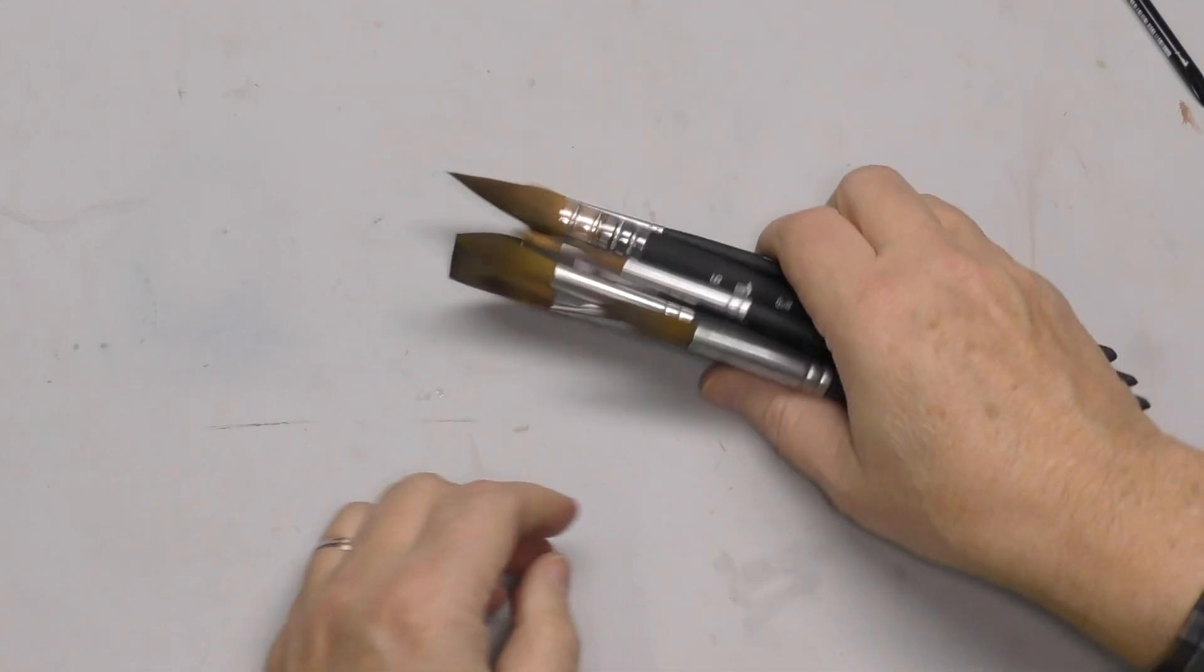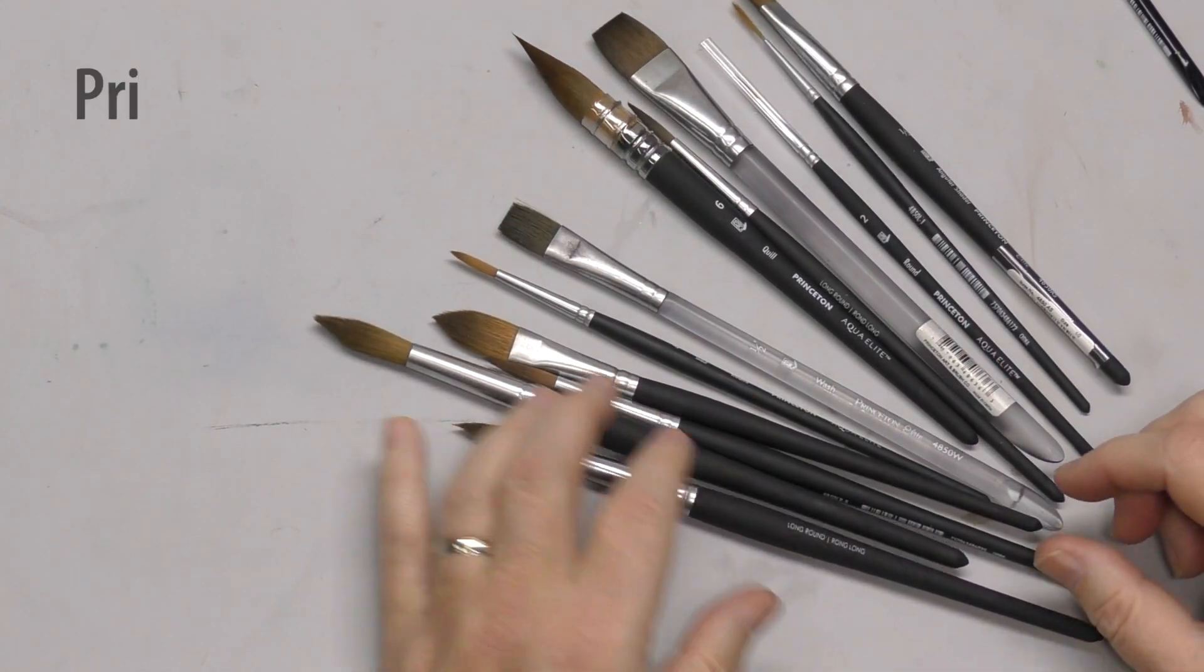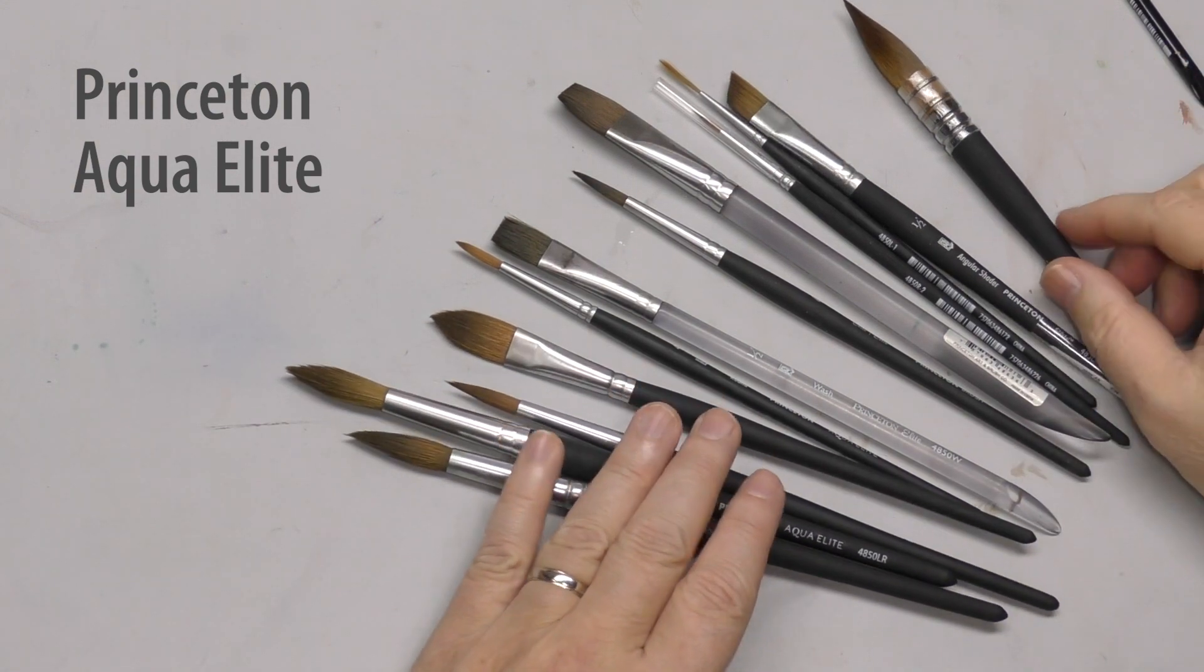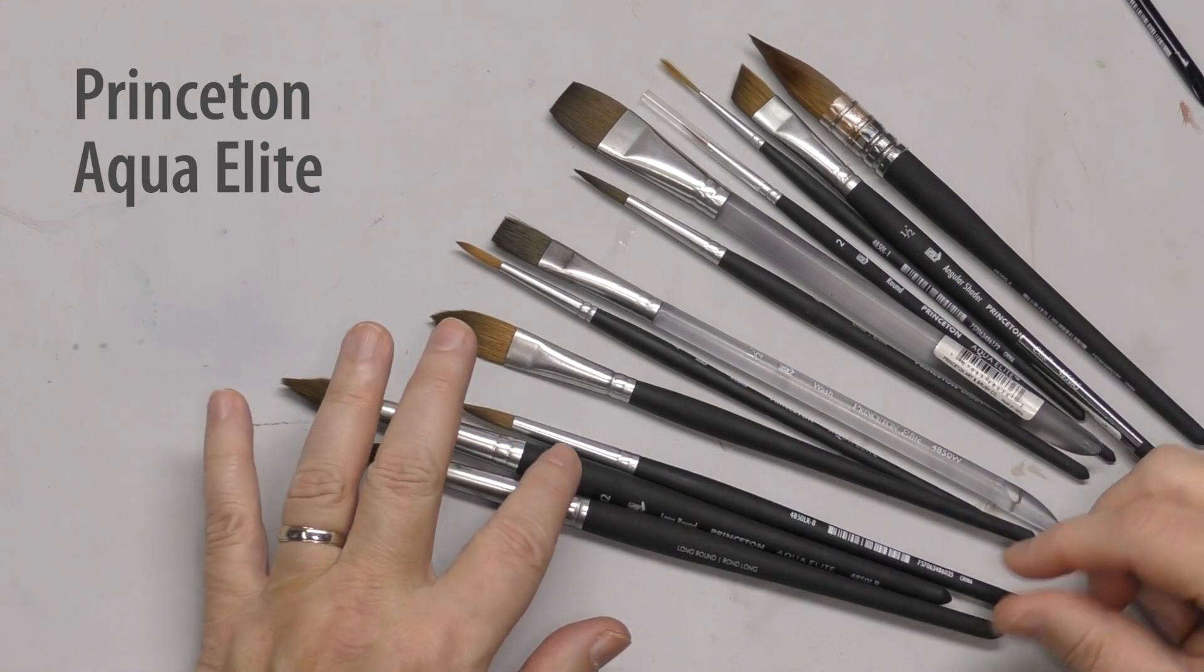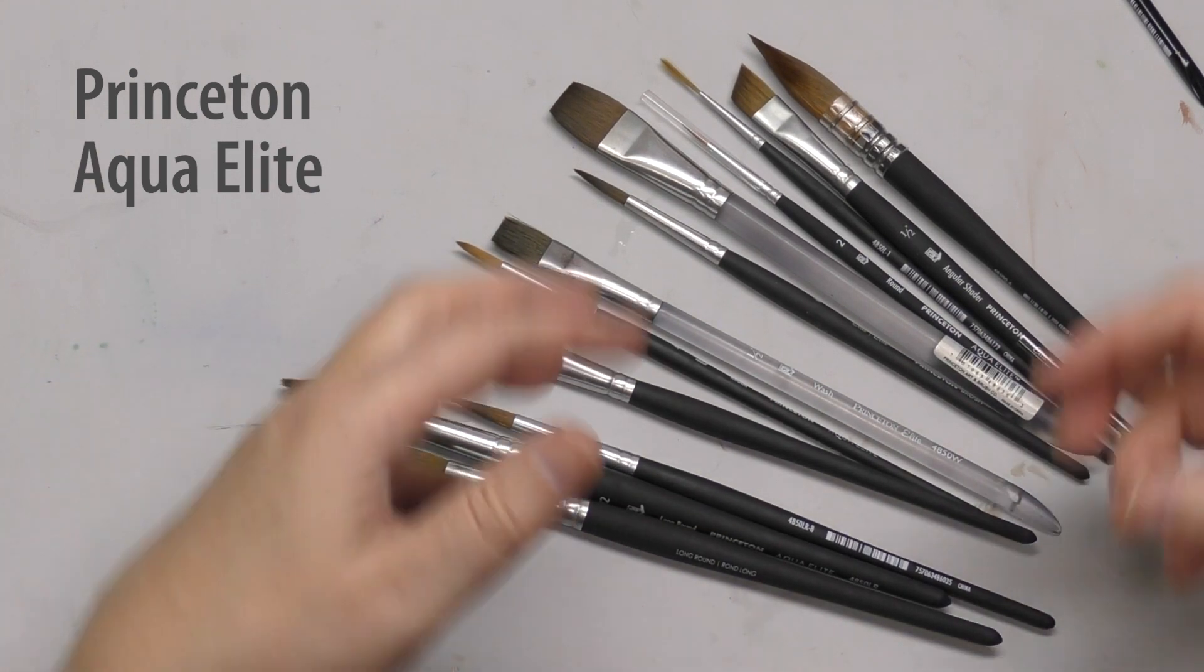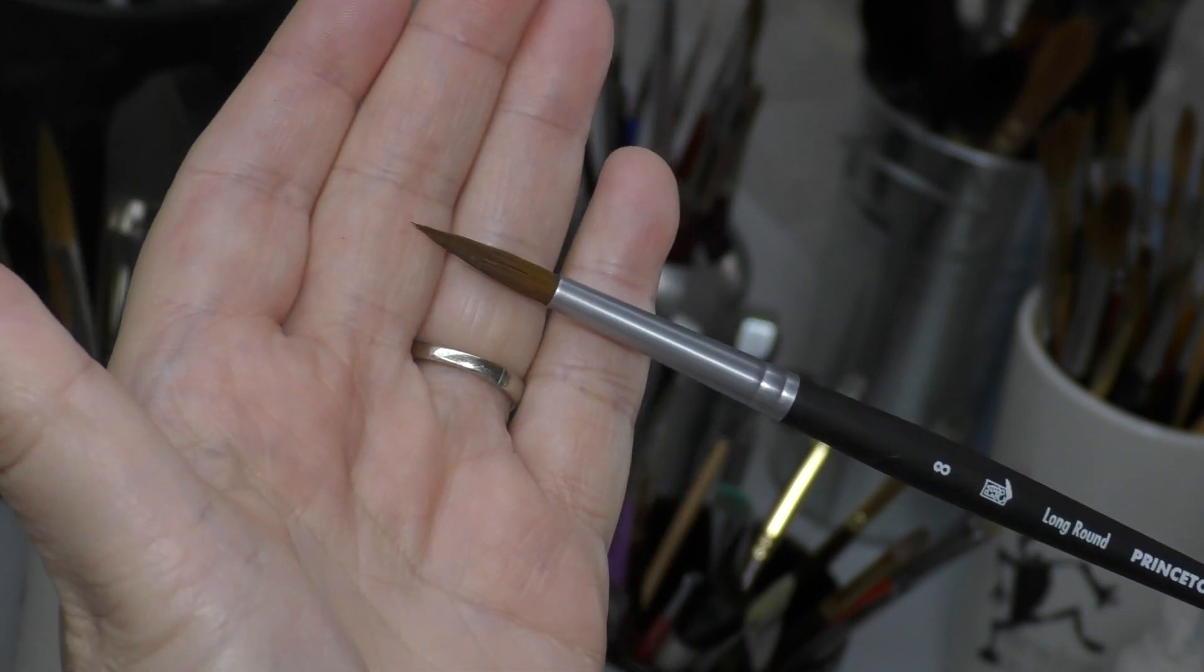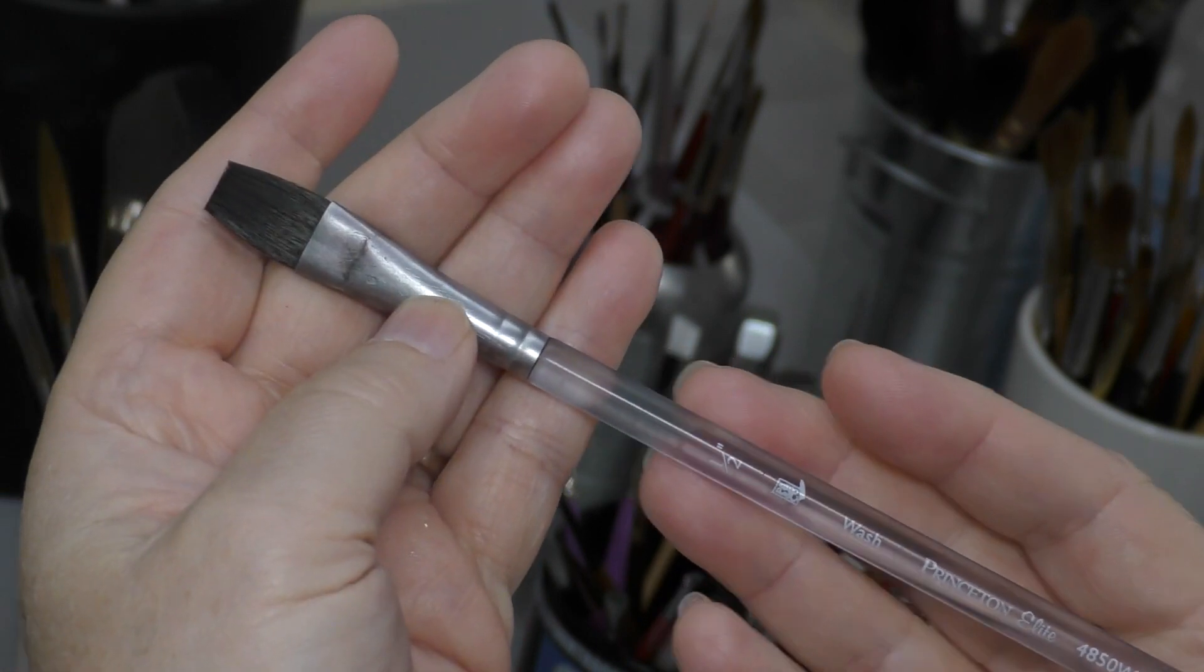Probably the most used brush in my collection is this one, the Princeton Elite. I have several, obviously. This is not even all of them. The Princeton Aqua Elite is considered a Kolinsky, a faux Kolinsky imitator. Wait, that's redundant. A Kolinsky imitator, a faux Kolinsky brush. They're meant to imitate Kolinsky sable. I especially like the long rounds, because they have these really needle-like points. But all of the brushes are useful.